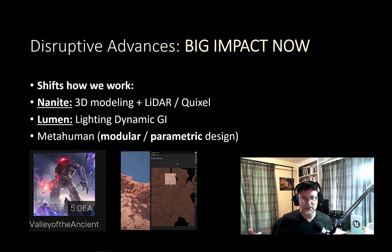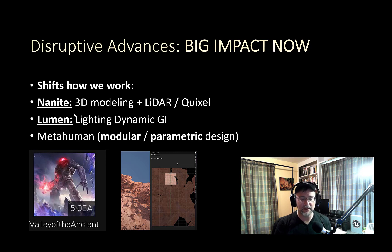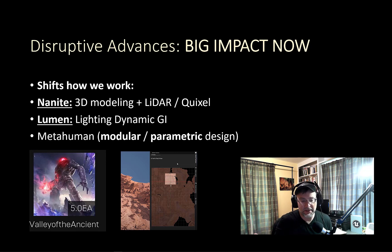In terms of disruptive advances with the biggest impact now, obviously Nanite and Lumen. If you were learning the nuances of SSAO or distance field ambient occlusion, you might want to wait if you have a very high-end graphics card or if your pipeline can allow for Lumen implementation, because a lot of that faked bounce lighting could be something that'll just be built in.